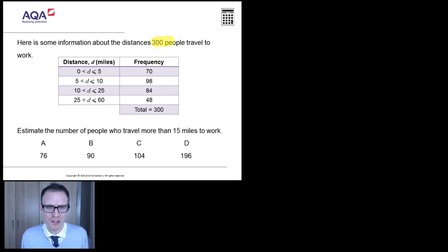Here's some information about the distances 300 people travel to work. So there's all our information there. Distances, frequency, fine. Estimate the number of people who travel more than 15 miles to work. Right, we're going to have to take our time with this. Now normally you might see this kind of question in two ways whenever you get a table like this. Maybe it's like draw a histogram or a frequency polygon or something like that but there's no mention of that. And normally when I see the word estimate I'm expecting estimate the mean of something. But there's none of that mentioned. What the flipping heck's going on there?